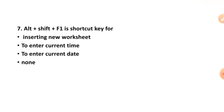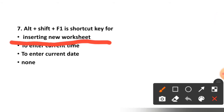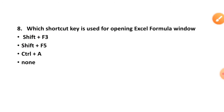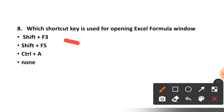The options for Alt plus Shift plus F1 are: insert new worksheet, enter current time, or enter current date. The correct option is option number one, insert new worksheet. Question number eight: which shortcut key is used for opening the Excel formula window? Shift plus F3, Shift plus F5, Control plus A, or none? The correct option is option number one, Shift plus F3.